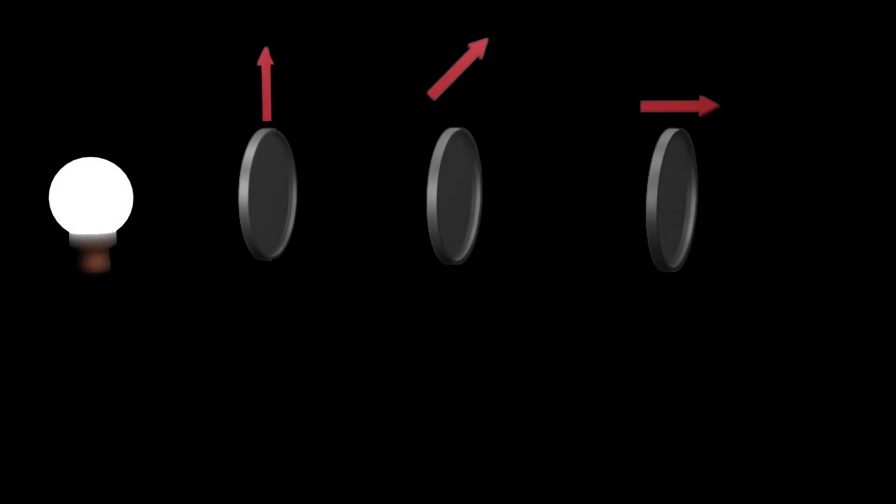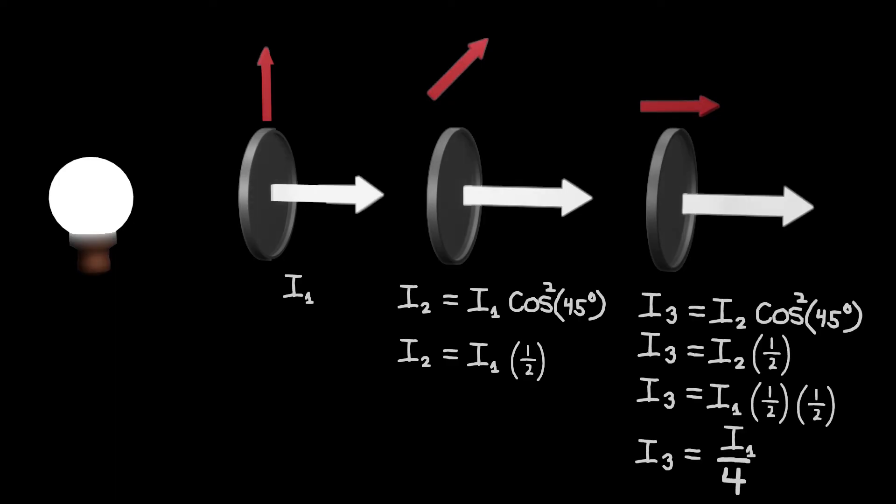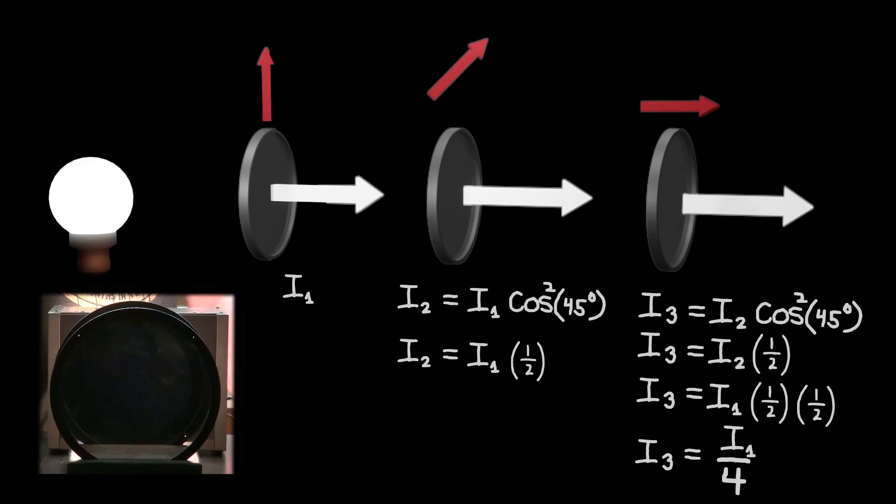Now when we add the third filter between the other two at 45 degrees, I2 is then equal to I1 times cosine squared of 45 degrees, which is one half. And then I3 is I2 times the cosine squared of 45 degrees, again one half. So as you can see, light will get through all three filters when they are oriented like this.